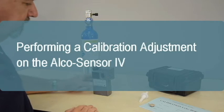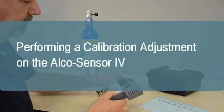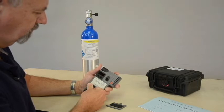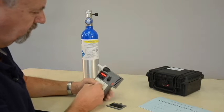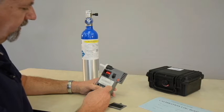AlkaSensor 4 instruments typically hold their calibration for months or even years without needing adjustment. Intoximeters does not require that the instruments be periodically calibrated. A calibration adjustment need only be performed if an accuracy check on the instrument has failed.